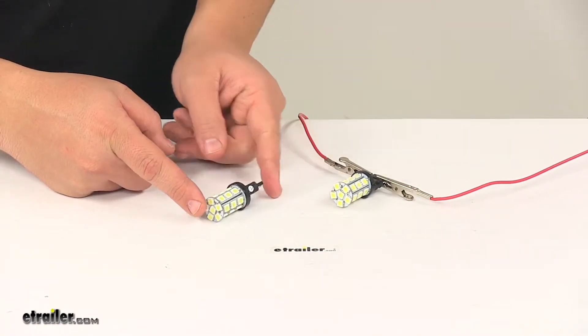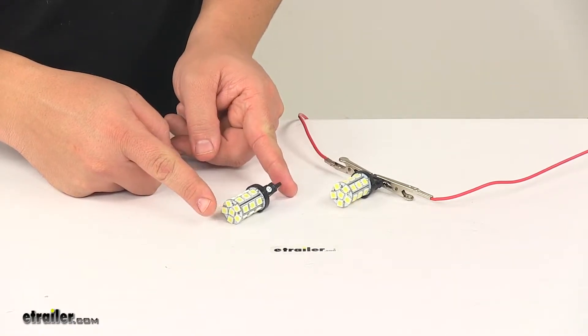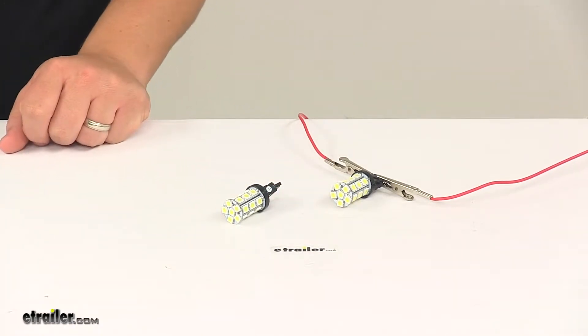LEDs are great replacements for incandescent lights. They last longer, they burn brighter, and they're much more efficient. You don't have to worry about replacing bulbs, and you don't have to worry about brittle filaments.